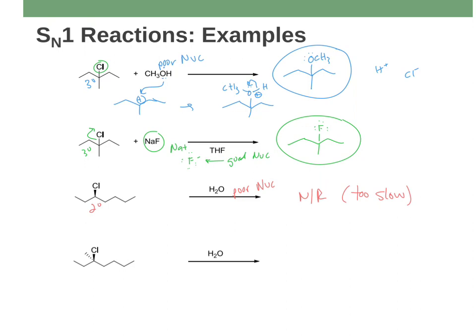Fourth example: water with a tertiary alkyl halide that has a chiral center. It's SN1, but since there's a chiral center, I draw two products — one with the OH coming toward me and one with OH going away. These are roughly 50-50 enantiomers. Pay attention to chiral centers in both starting materials and products. That's SN1 in a nutshell. Hopefully you feel more comfortable with it — do practice worksheets and find problems in the book. Good luck and happy studying.